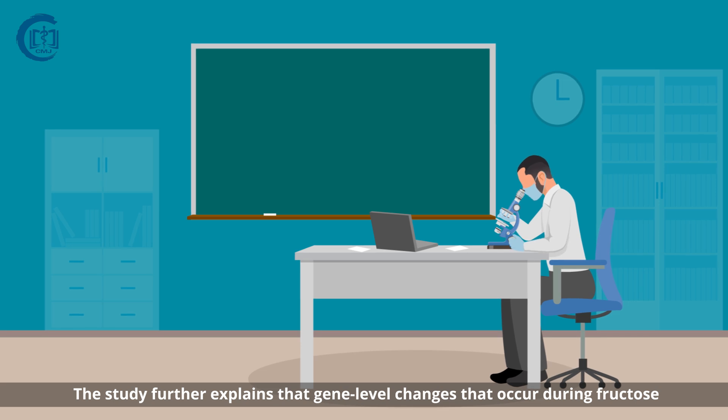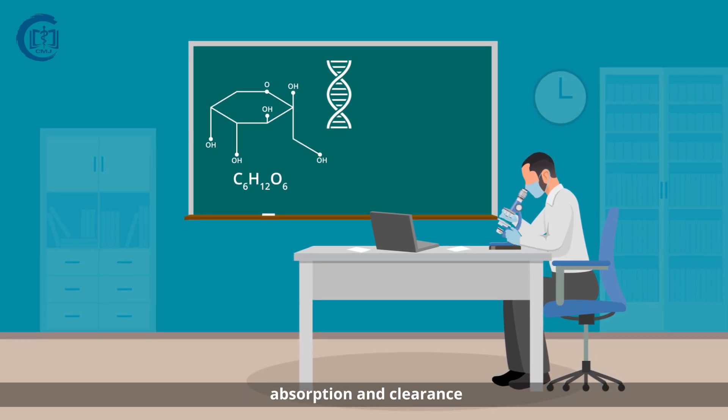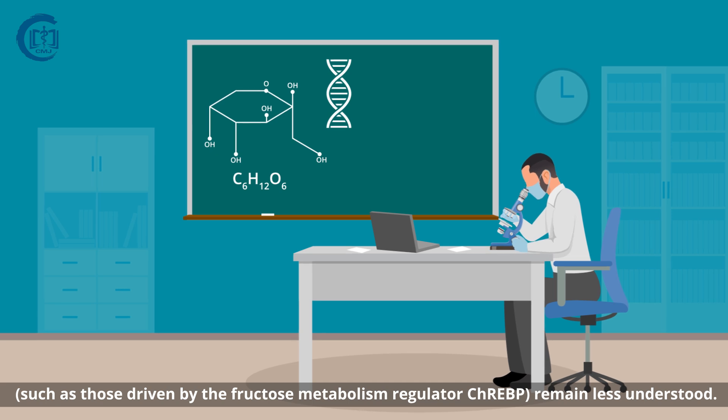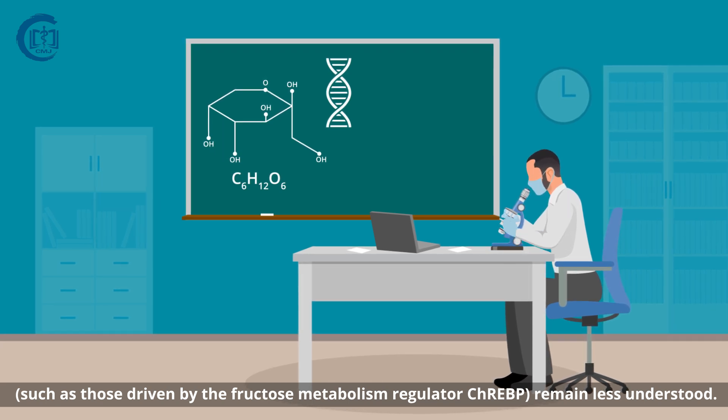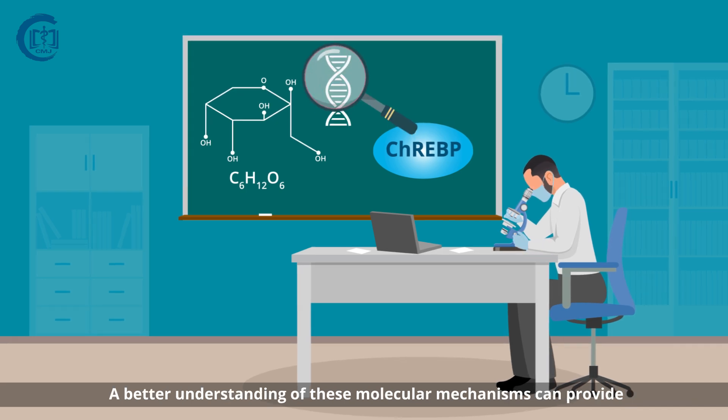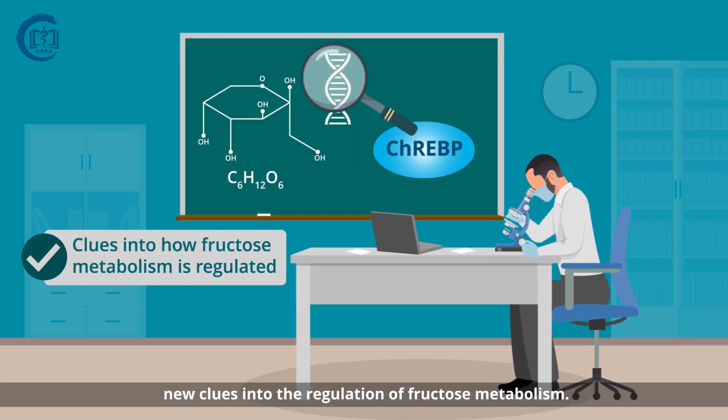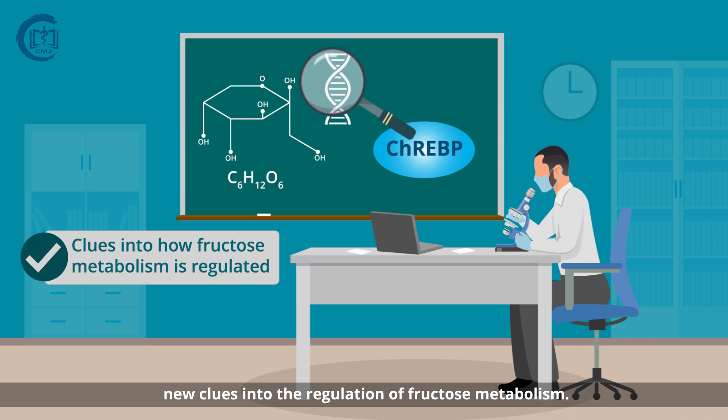The study further explains that gene-level changes that occur during fructose absorption and clearance, such as those driven by the fructose metabolism regulator ChREBP, remain less understood. A better understanding of these molecular mechanisms can provide new clues into the regulation of fructose metabolism.